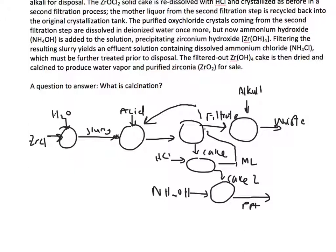Filtering the resulting slurry yields an effluent solution containing dissolved ammonium chloride, which must be further treated prior to disposal. The filtrate has the NH4Cl which must be treated again, and then that goes to waste.